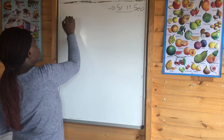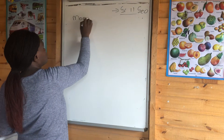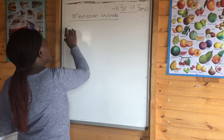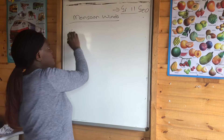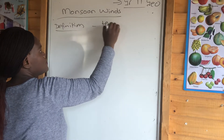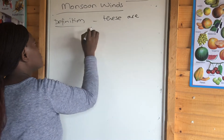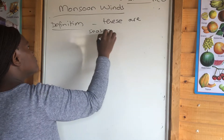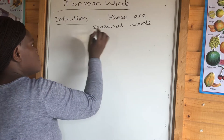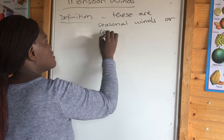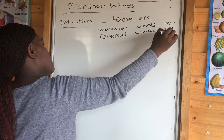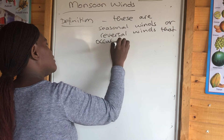What are monsoon winds? In terms of the definition, these are seasonal winds — or they can also be known as reversal winds — that occur within the tropics.